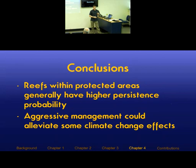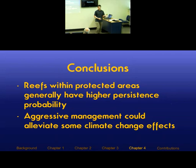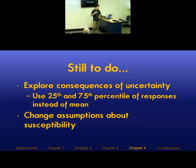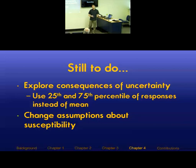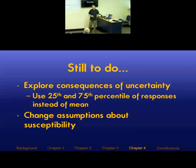Main conclusions: reefs within protected areas generally have higher persistence probability, although in some cases not a huge difference. Aggressive management of stressors — ratcheting down sediment and nutrient loading and decreasing fishing pressure outside protected areas — could alleviate some climate change effects, but the effect in this model is actually quite small. This chapter is still a work in progress; I still need to explore parameter sensitivity and explore assumptions about bleaching susceptibility — whether areas that bleached in the past are more or less susceptible in the future, which is an area of active debate.